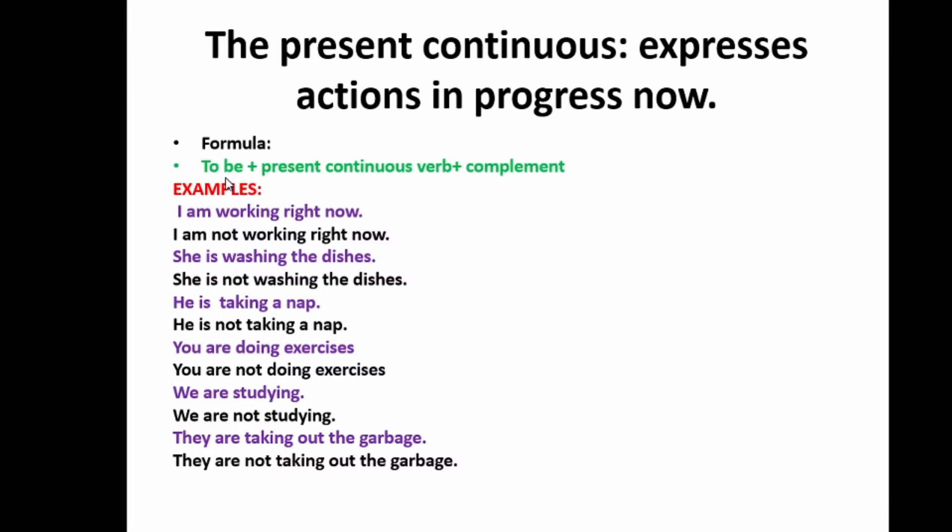Necesitan saber el verbo to be, sobre estar, the conjugation in present. Because you're going to link the verb to be plus the verb in -ing form, plus complement. Es importante saber la conjugación en presente del verbo to be porque usted lo va a acompañar con el verbo en gerundio o la forma del presente continuo más el complemento.